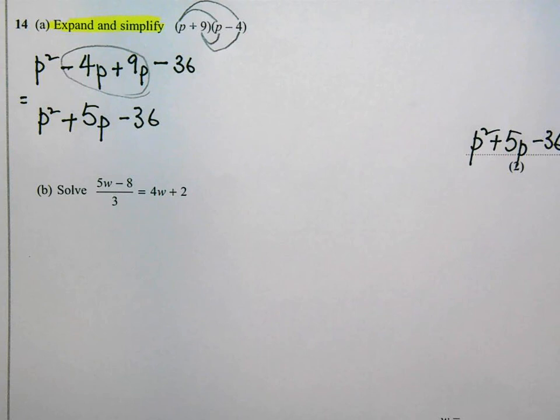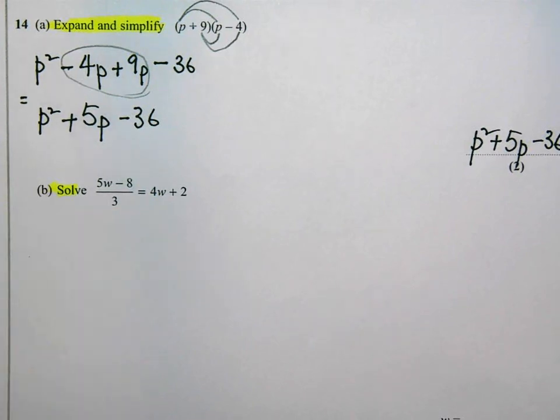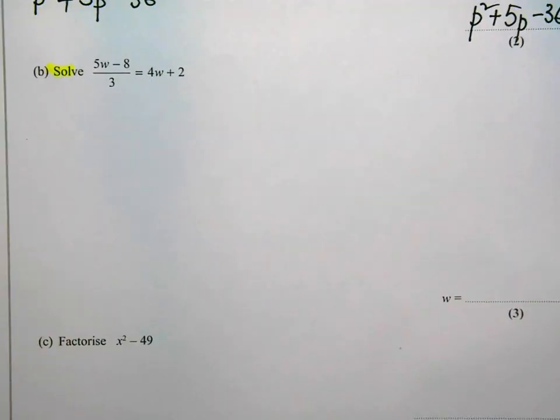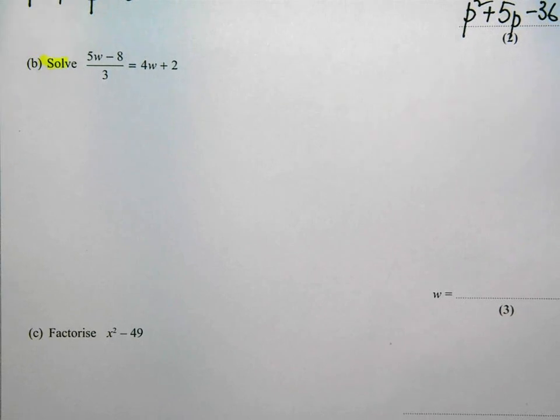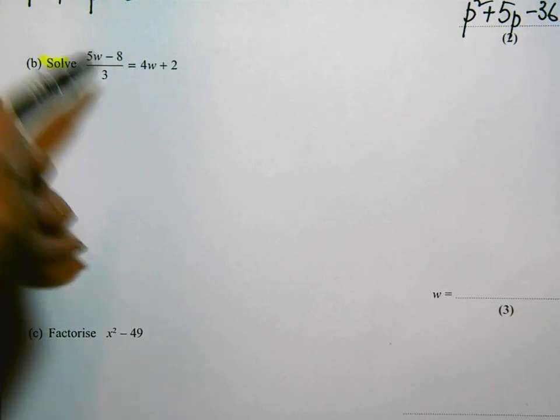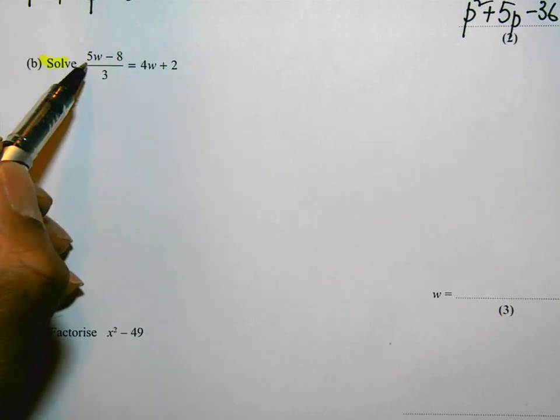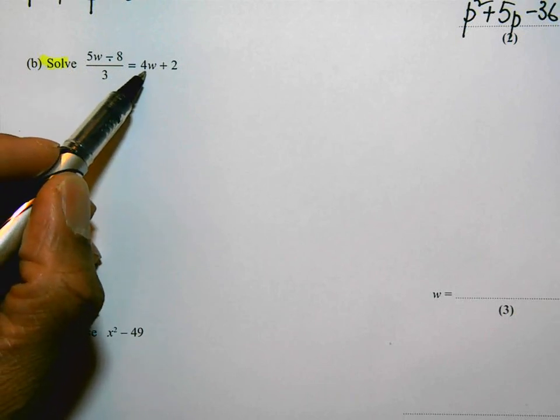If you do this by the box method, try it. See, you should get the same answer as what I've got there. Okay, going on to part B now. In part B it says solve this. Solve means to work out the value of w. I need to get rid of that 3 from the bottom. If I read the equation first, it's 5w take away 8 divided by 3 is equal to 4 times w plus 2.